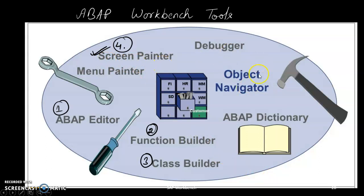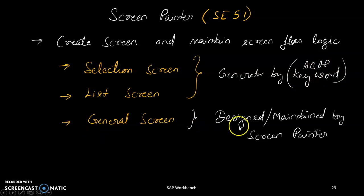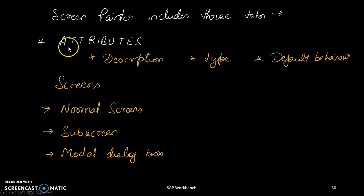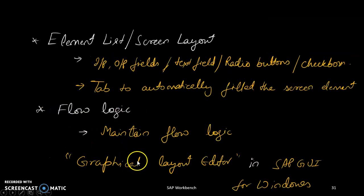With the screen painter, you can create a screen and create buttons that trigger the program. Screen painter is used to create screens and maintain screen flow logic. There are three types of screens: selection screen, list screen, and general screen. Selection and list screens are generated by ABAP keywords; the general screen is designed and maintained by screen painter. Every screen has three attributes: description, type, and default behavior. Screen types include normal screen, sub-screen, and modal dialog box.